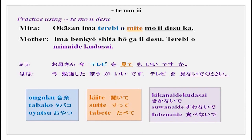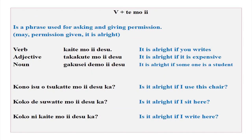For tobacco, your friend asks: ima koko de tabako wo sutte mo ii desu ka? Iie, koko de tabako wo suwanai de kudasai — please do not smoke here. Or before dinner, you want oyatsu: okaasan will say oyatsu wo tabenai hou ga ii desu, ima oyatsu wo tabenai de kudasai. To a friend you would use kudasai in polite form: tabako wo sutte mo ii desu ka, ongaku wo kiite mo ii desu ka.